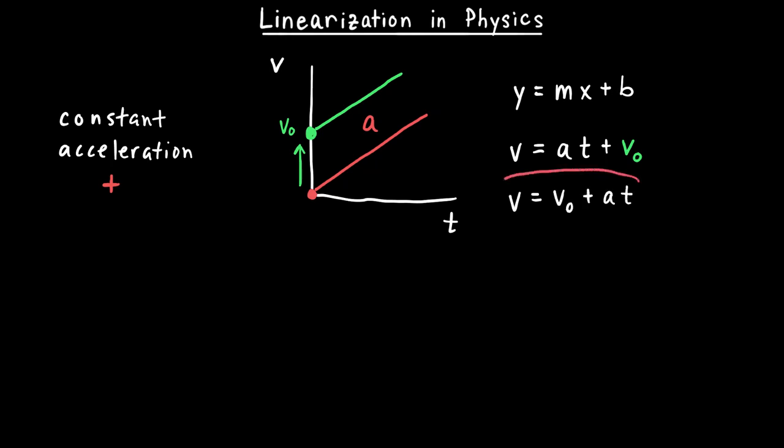Those of you who have studied kinematics know that if I rearrange this equation — v equals v-naught plus at — that is one of our kinematic equations. There are ways to relate what I see in a graph to the equation of a line, which is useful not only because it leads to this equation but also because it helps us understand what the slope and y-intercept represent. In a more difficult case, I might be able to create an equation that describes the physical situation.